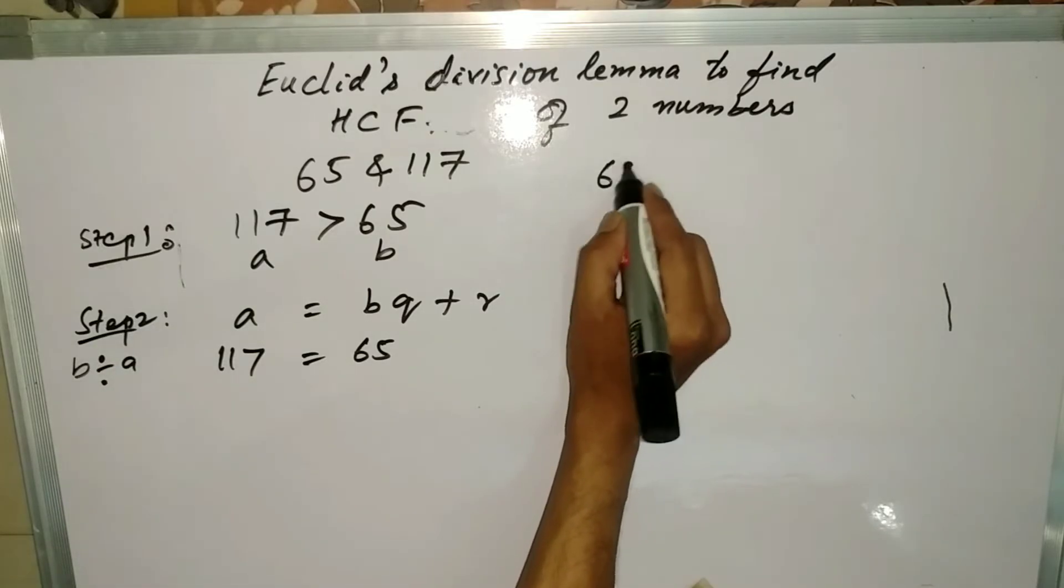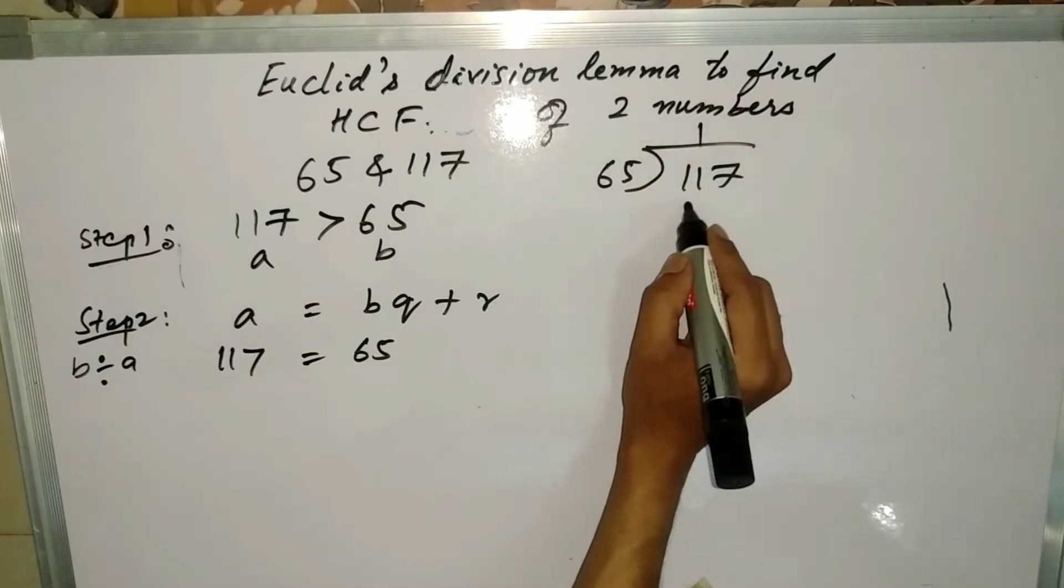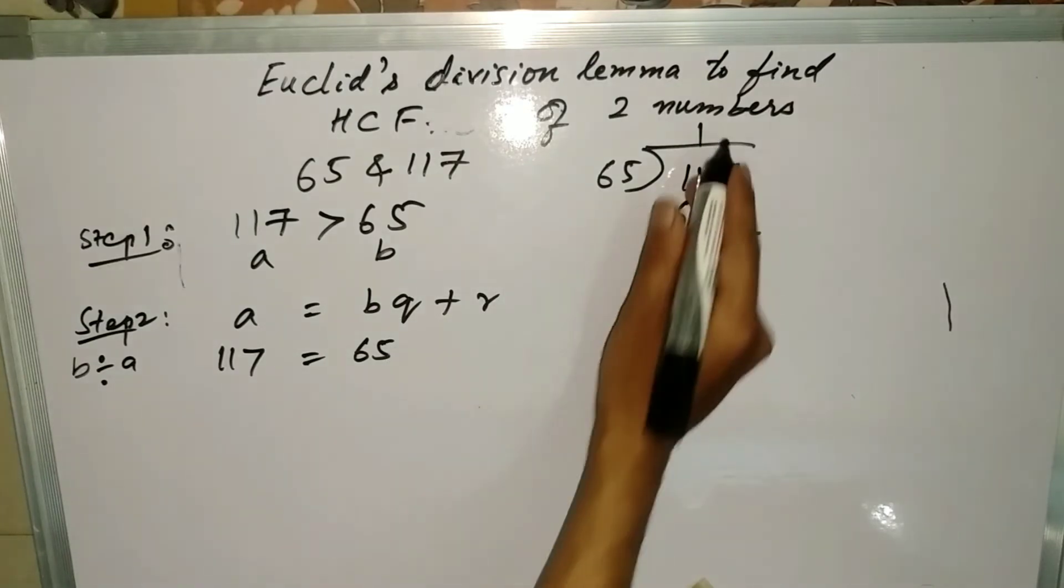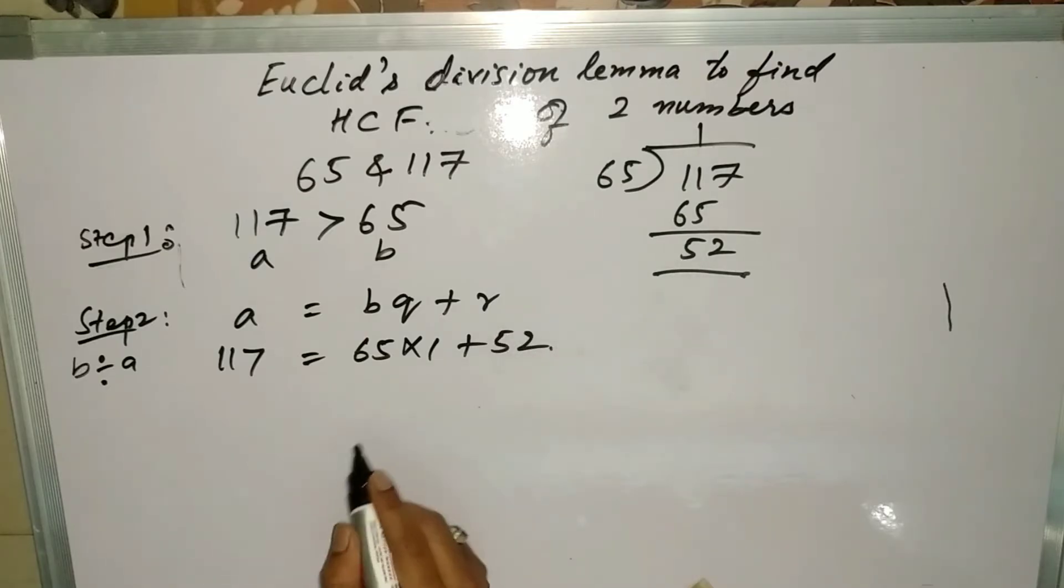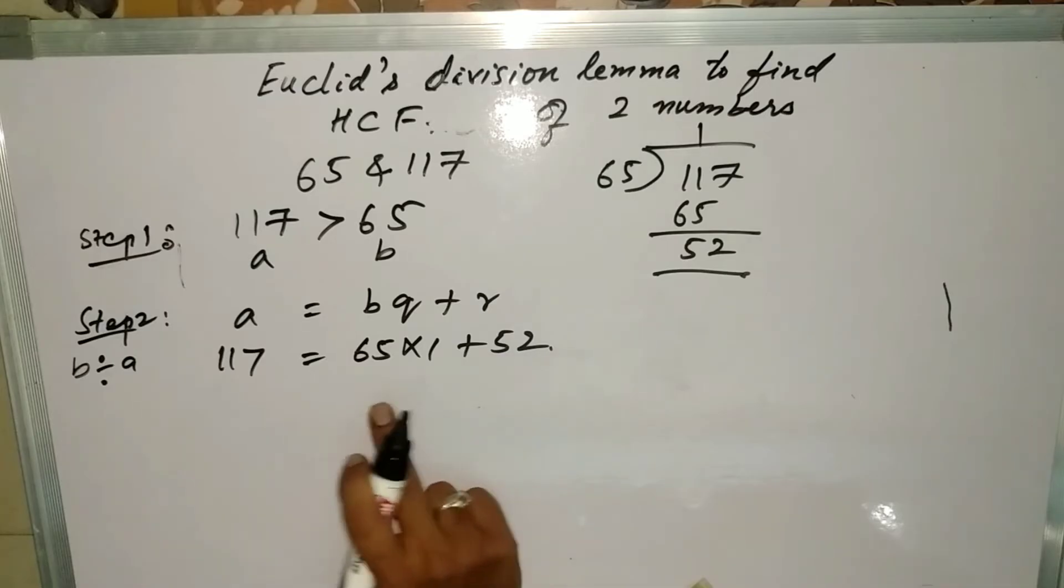So 65 into 117: 65 ones are 65, if we subtract it we get 52. So the quotient is 1 and remainder is 52. As you divide it we get the quotient and remainder.